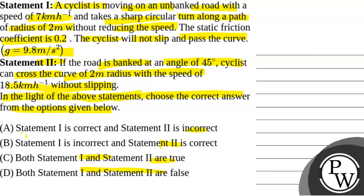So we will solve this question. First of all, we will see what will be the key concept used to solve this problem. For unbanked road, the maximum safe velocity Vmax equals the square root of mu g r. This is for unbanked road.